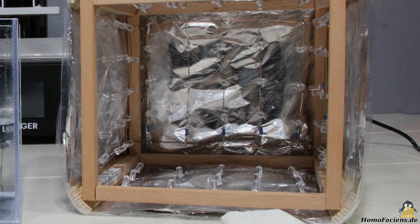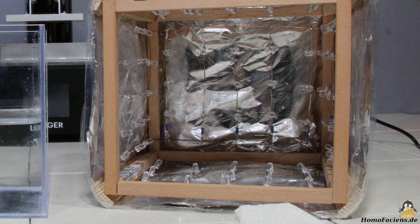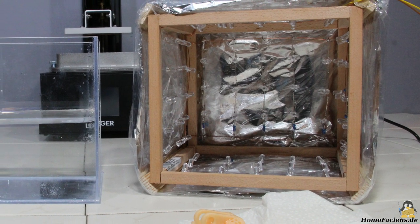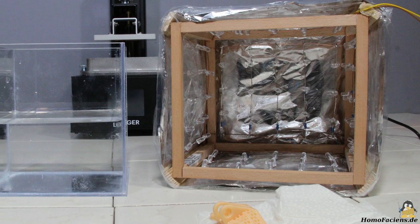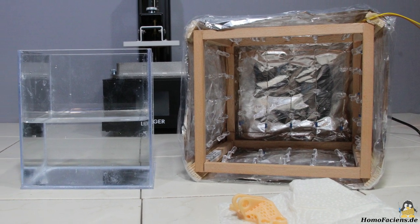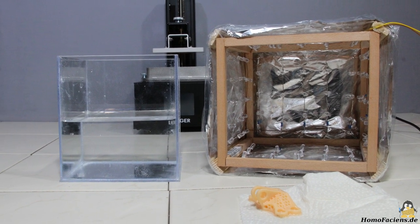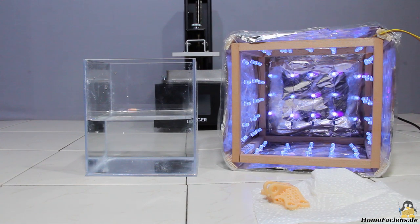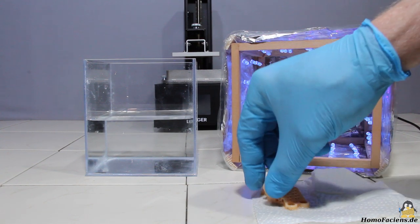The printed object is still quite soft, ultraviolet light is required to allow the resin to cure completely. To make it simple, place the object in sunlight, however I made a box equipped with 75 LEDs emitting ultraviolet light. The benefit is that you are independent from weather and time of day, and the curing takes place under controlled conditions.